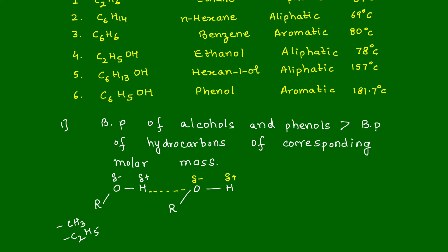Same way, for the second set, we have delta negative and delta positive. And the hydrogen atom of one molecule attracts the oxygen of the second molecule resulting in what type of a bond? Very correct. We get what we call as a hydrogen bond.